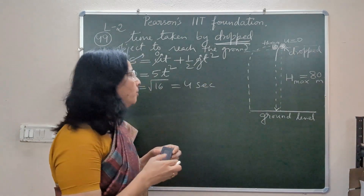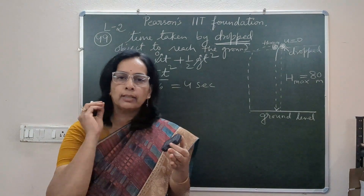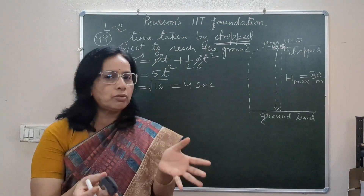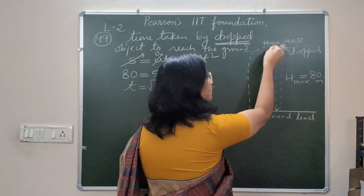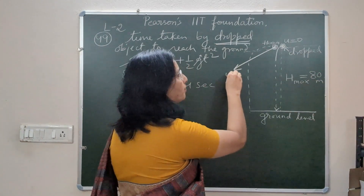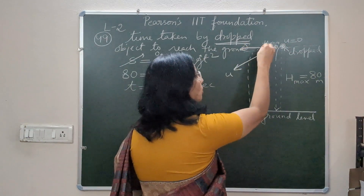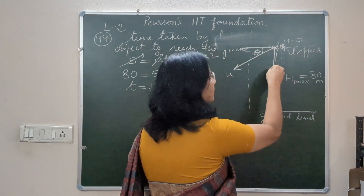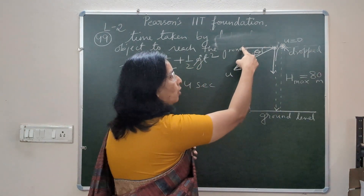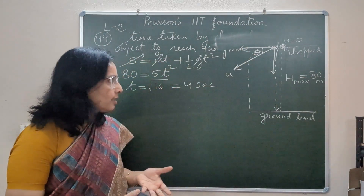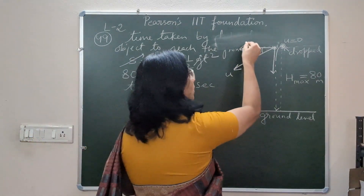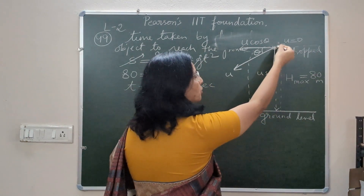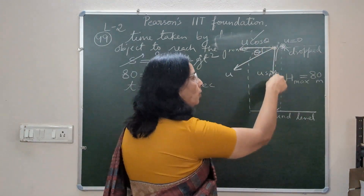So the dropped object takes 4 seconds to reach the ground. Now, what about the thrown object? If an object is thrown with some velocity, we must remember that velocity is a vector quantity, and every vector quantity can be resolved into two components. If the object is thrown at a certain angle theta, the horizontal component is u·cosθ and the vertical component is u·sinθ.